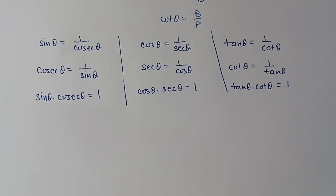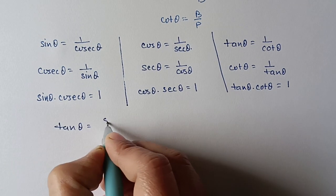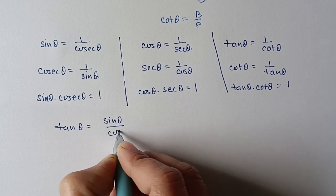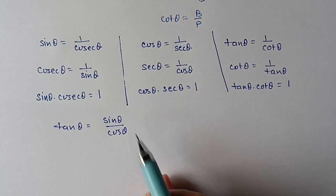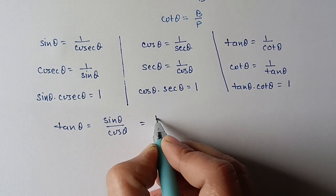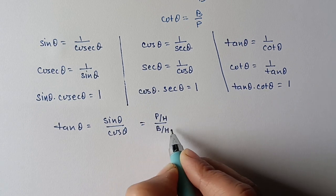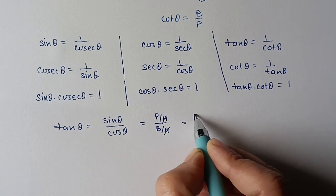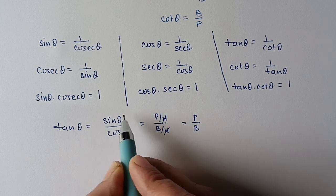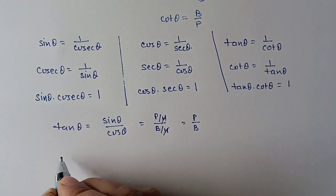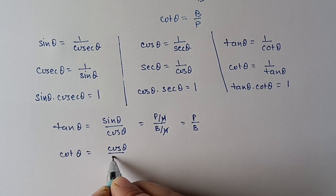Tan theta we can write in another way also. We can write tan theta is equal to sine theta upon cos theta, because if we substitute: sine theta is perpendicular by hypotenuse and cos theta is base by hypotenuse — the hypotenuse cancels out and we get perpendicular by base. So tan theta can be written in terms of sine and cos also. Similarly, cot theta can be written as cos theta upon sine theta.